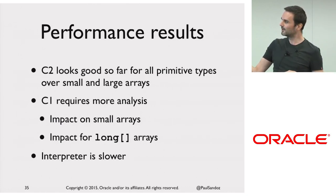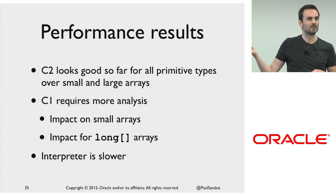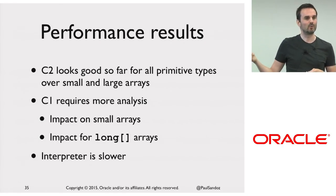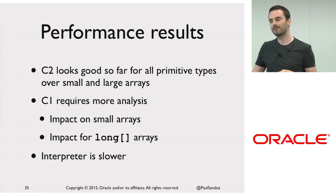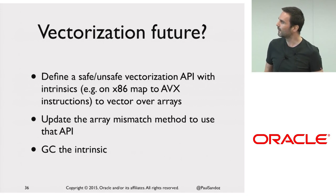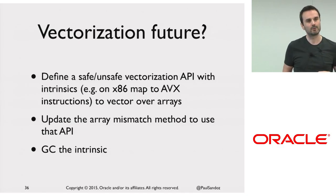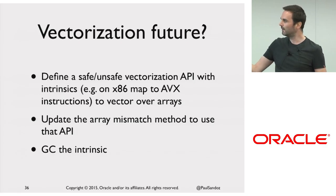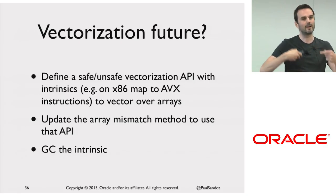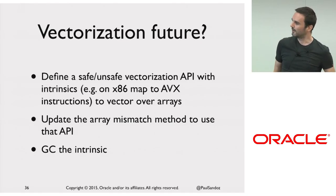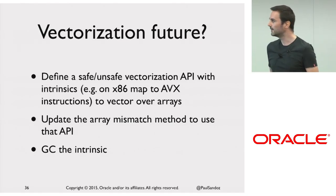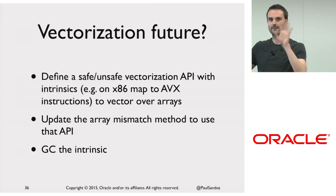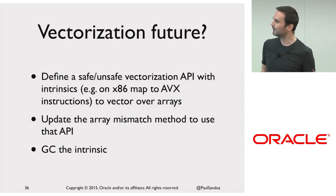C2 looks good. Does anyone care about C1? The interpreter's slow, so I've got to do more work to see if this is viable if I don't intrinsify the method. As a future direction around vectorization, perhaps we can GC that particular thing and then move to some form of safe vectorization API in the future, getting better performance and more usability in other cases. I think that could be a key thing for arrays 2.0 in the future.